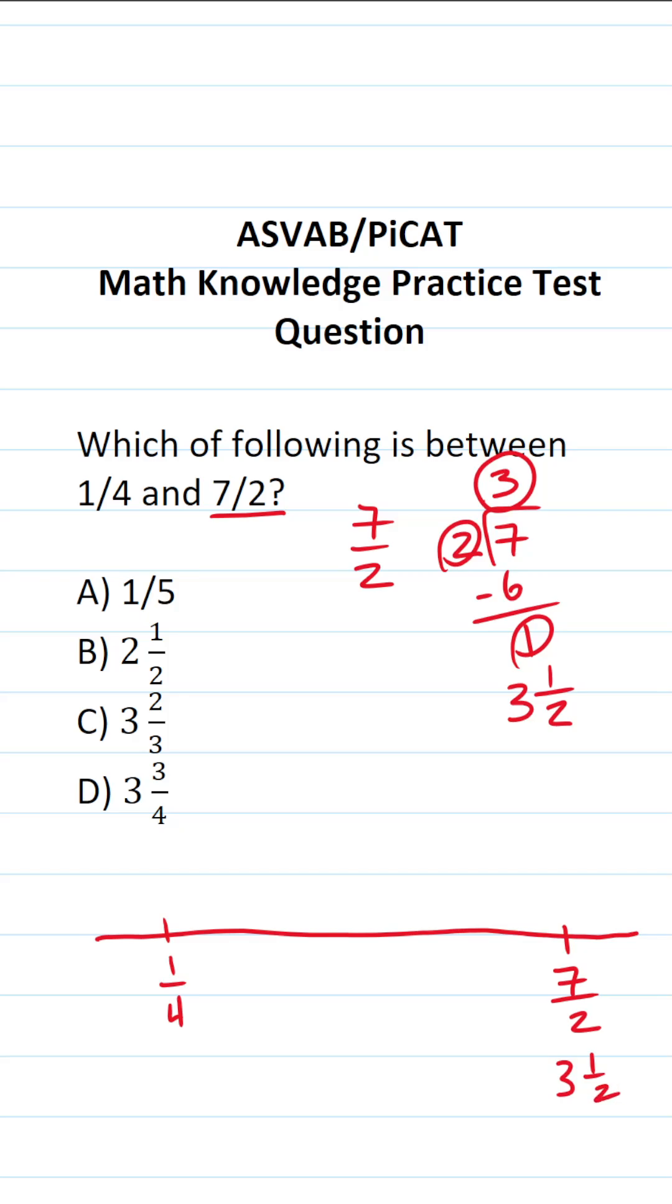And if you prefer it, you could write it like this, 3.5. Likewise, you could write the decimal equivalent of 1/4. You should know that that is 0.25. So in other words, we're looking for the fraction that is in between 0.25 and 3.5, or 1/4 and 7/2, which is the same thing as 3 and 1/2.